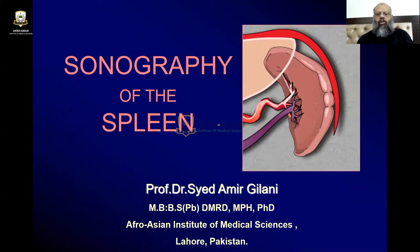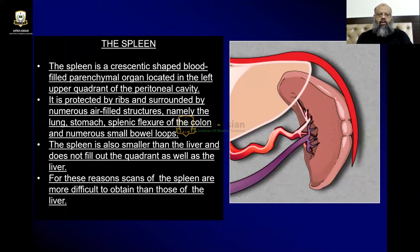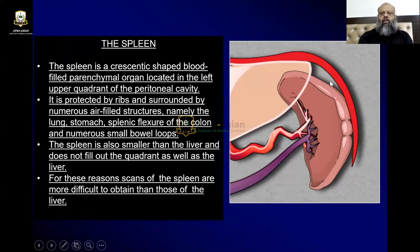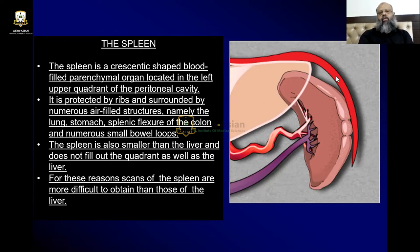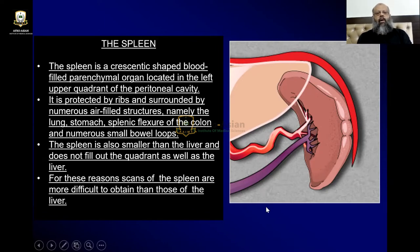Sonography of the spleen. The spleen is an enteric-shaped, blood-filled parenchymal organ located in the left upper quadrant of the peritoneal cavity. You can see the diaphragm, the left lobe of liver, and then the spleen. It is protected by the ribs and surrounded by numerous air-filled structures, namely the lungs, stomach, splenic flexure of the colon, and numerous small bowel loops — all these structures are covering it.